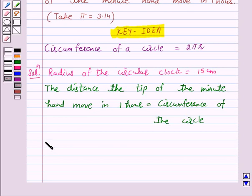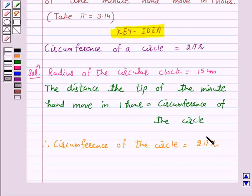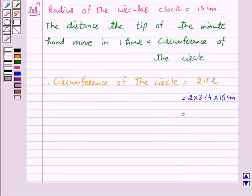Therefore, the circumference of the circle is given by the formula 2 pi r. Now we have to take pi is equal to 3.14. So this is equal to 2 into 3.14 into 15 cm. So this is equal to 94.20 cm.